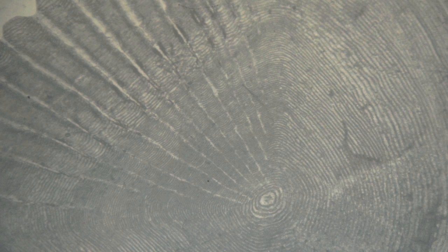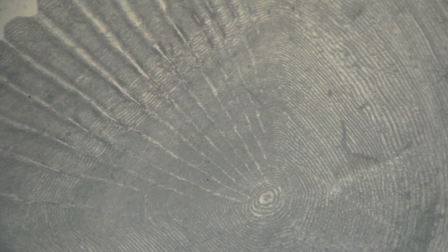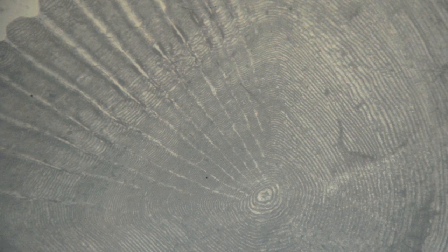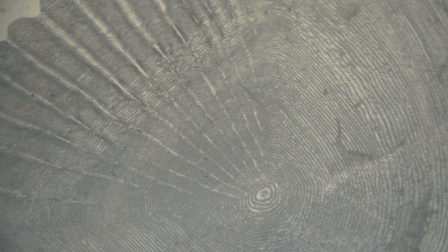Notice how the rings of the scale are sometimes far apart and sometimes close together. This is because the fish grows faster in the warmer months because it has more food, making the rings further apart.